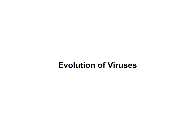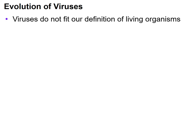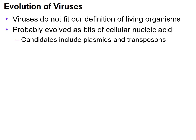Now let's talk a little about the evolution of viruses and some sub-viral particles. Viruses can evolve very quickly and do not really fit our definition of living organisms, as they don't possess all of the characteristics of living things. They likely evolved as little bits of cellular nucleic acid from other organisms. Other candidates include plasmids and transposons as bits of cellular nucleic acid. Plasmids, transposons, and viruses are all considered mobile genetic elements.